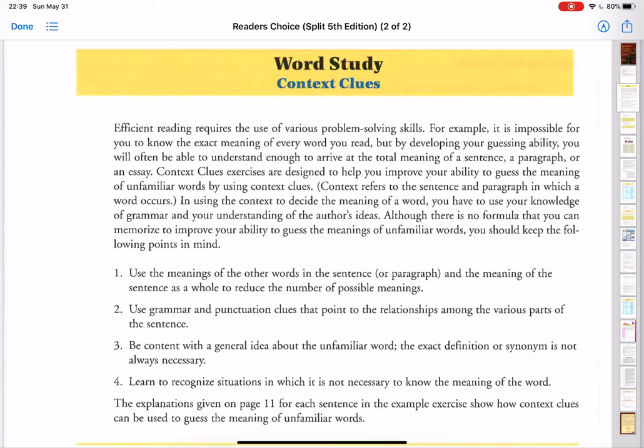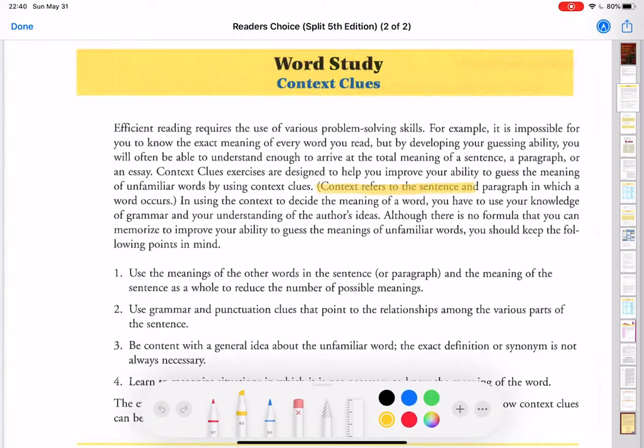Context clues are designed to help you improve your ability to guess the meanings of unfamiliar words. Context clues are the sentence and paragraph in which a word occurs. Using the context to decide the meaning of the word, you have your own knowledge of grammar, your own understanding of the author's ideas. There's no specific formula that you can memorize for every single word you'll ever see, and that's impossible really.